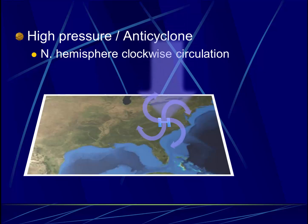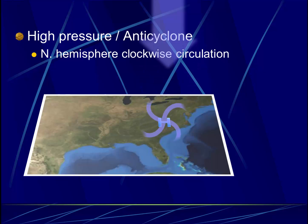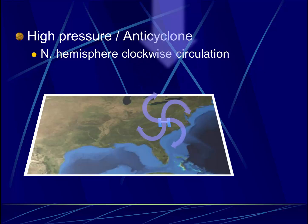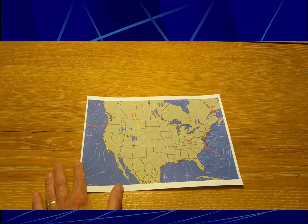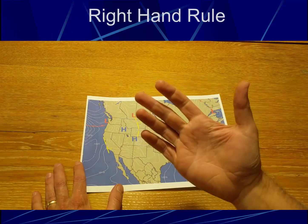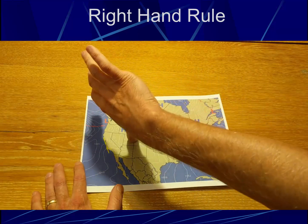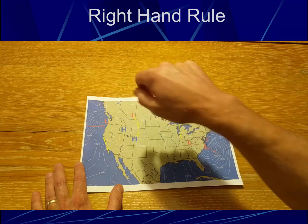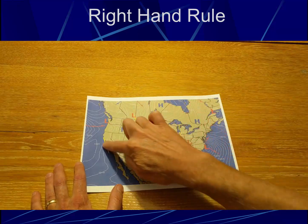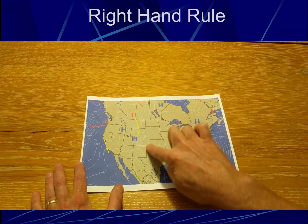Due to the Coriolis effect, these circulations are opposite in the southern hemisphere. So if we see a high pressure on a map, we can assume that the air circulating around that zone of high pressure is moving in a clockwise circulation. We can understand surface wind direction with something I call the right-hand rule. On a weather map, put your thumb on that zone of high pressure — that indicates air is sinking — and your fingers will curl in the direction of air circulation.